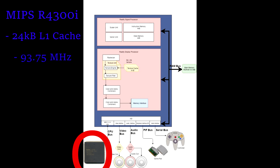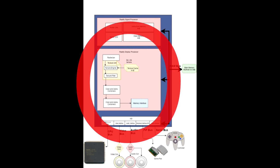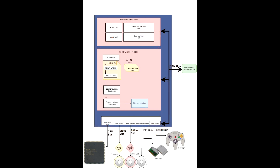It could perform about 125 million instructions per second and about 93.75 million floating point operations per second. The GPU, on the other hand, was what's called the Reality Co-Processor. It was also 64-bit, and it was clocked just at 62.5 megahertz. It also had microcode capabilities, so you were able to have an interface to how the GPU is accessed, and it was possible to make it more efficient than the Nintendo standard microcode that came with the device. The Reality Co-Processor was composed of two integrated processors: the Reality Signal Processor and the Display Processor.